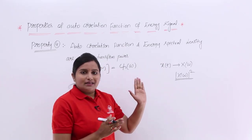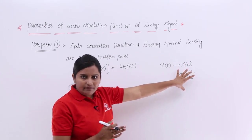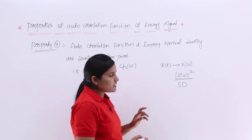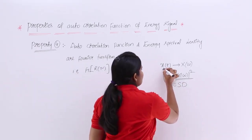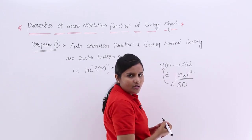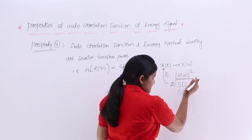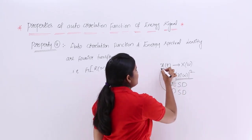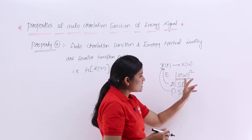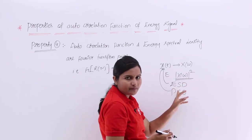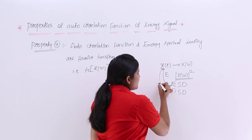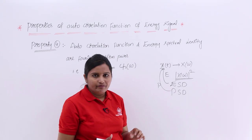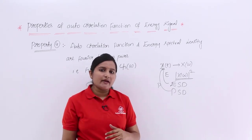This spectral density Sd is called energy spectral density whenever the signal is an energy signal. The same spectral density is called power spectral density whenever the signal for which you calculated the spectrum is a power signal.